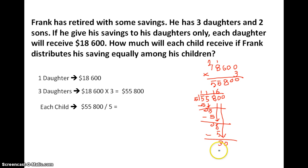So 1 multiplied by 5 gives us 30. 6. 6 multiplied by 5 gives us 30. And we are left with one more 0 at the back. So 0 multiplied by 5 gives us 0. Alright. So each child will receive $11,160 if Frank were to distribute his savings equally among his children.